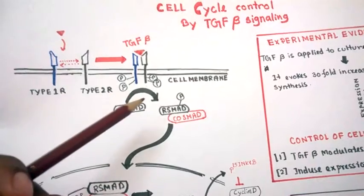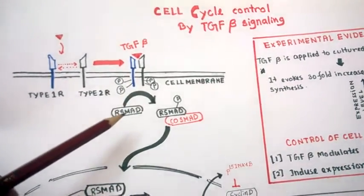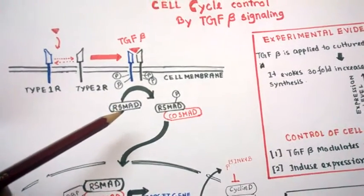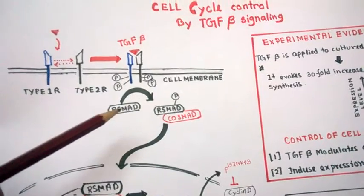These SMAD molecules are very important for the TGF beta signaling pathway, and these RSMAD molecules, receptor-mediated SMAD molecules, get phosphorylated.